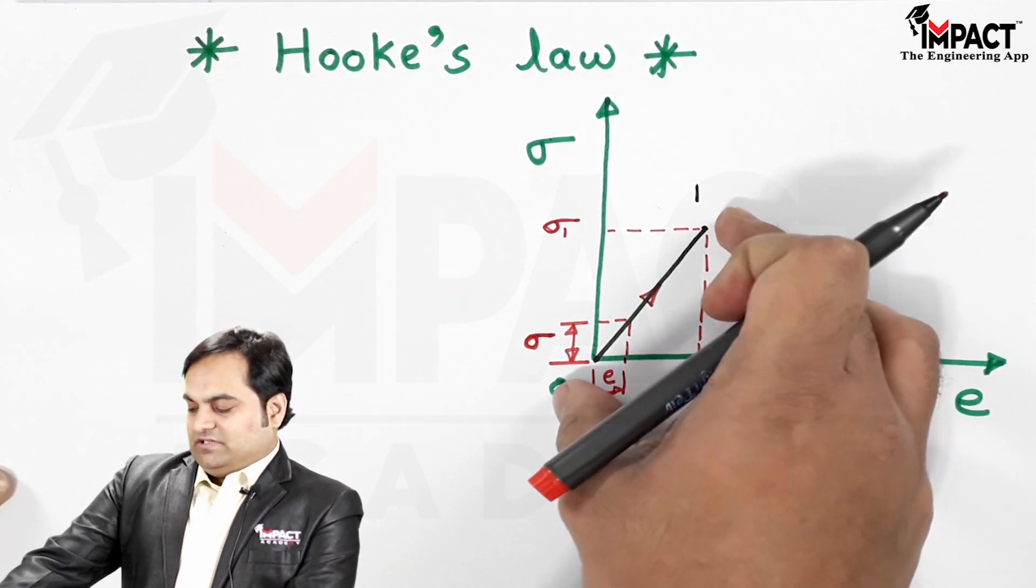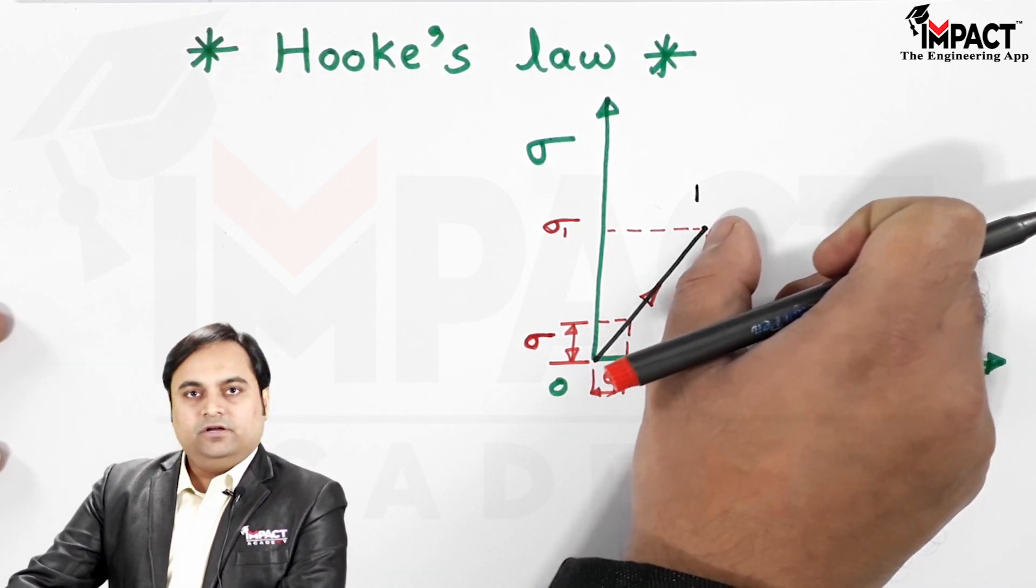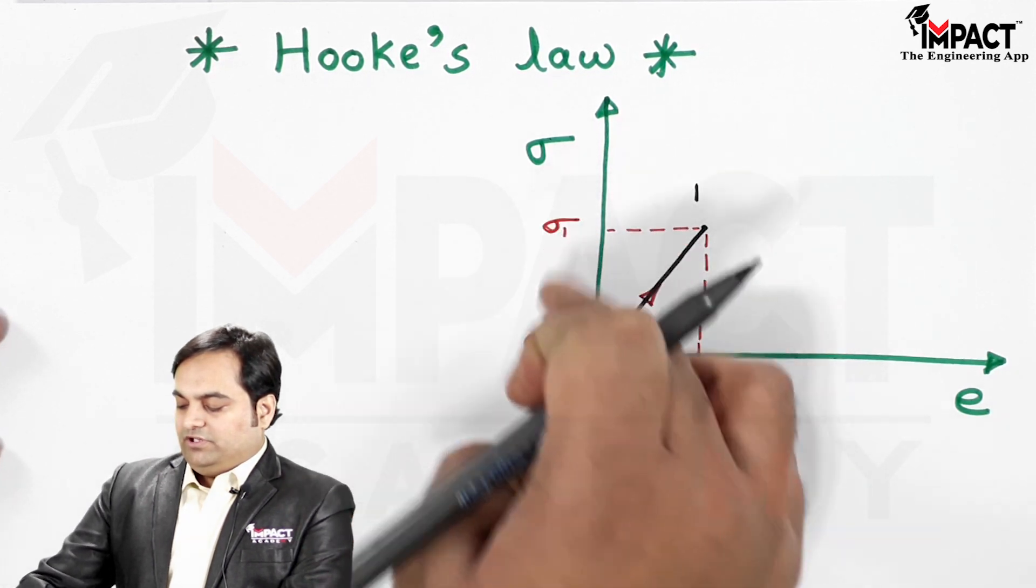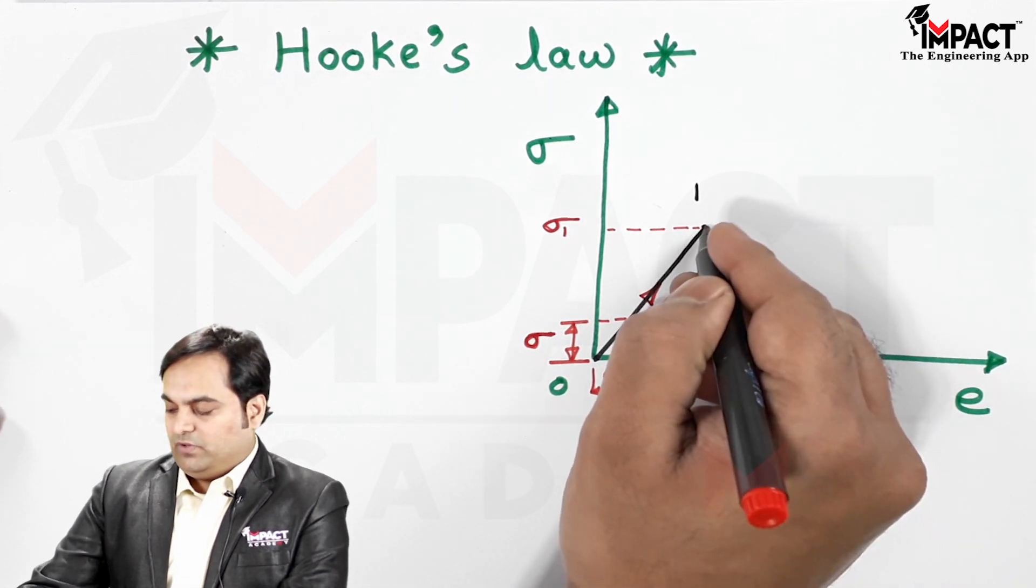Within this limit we can see that the stress is directly proportional to the strain, the graph being linear. It means the moment we go on increasing stress, strain also goes on increasing, and that is the behavior up to point number 1.